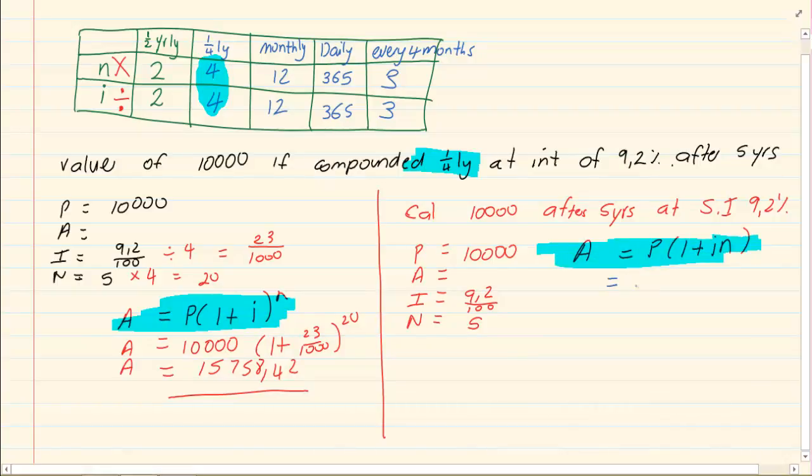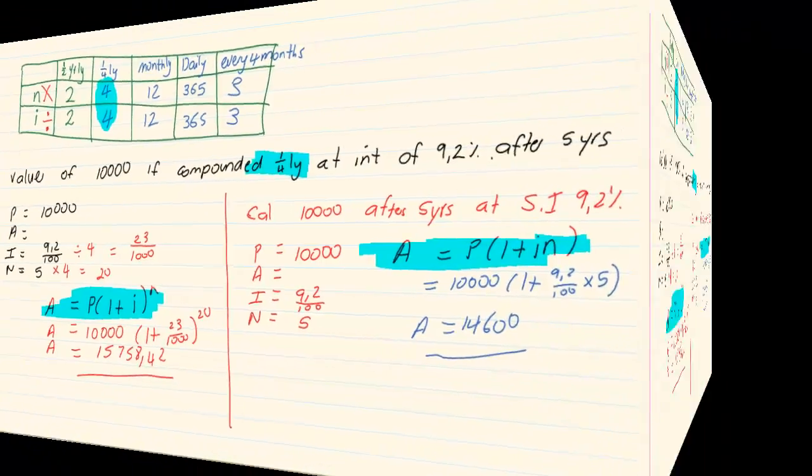Simply substitute. Use your calculator to get the answer. And we have A is equal to 14,000. Let's go to the next section.